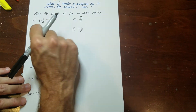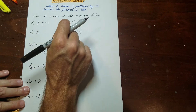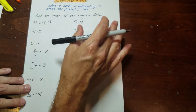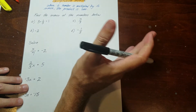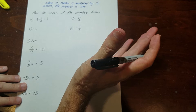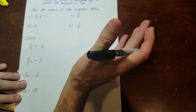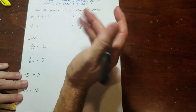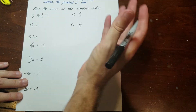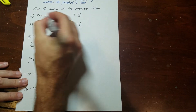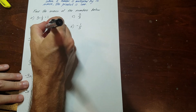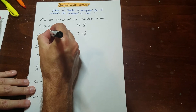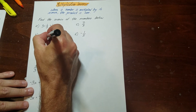For example, if I multiply 3 times negative 3 — because I confuse the opposite with the inverse — I'd get negative 9, and that's not 1. So if something's the inverse, by definition, when you multiply it you get 1. So the inverse of negative 2 is negative 1 half.